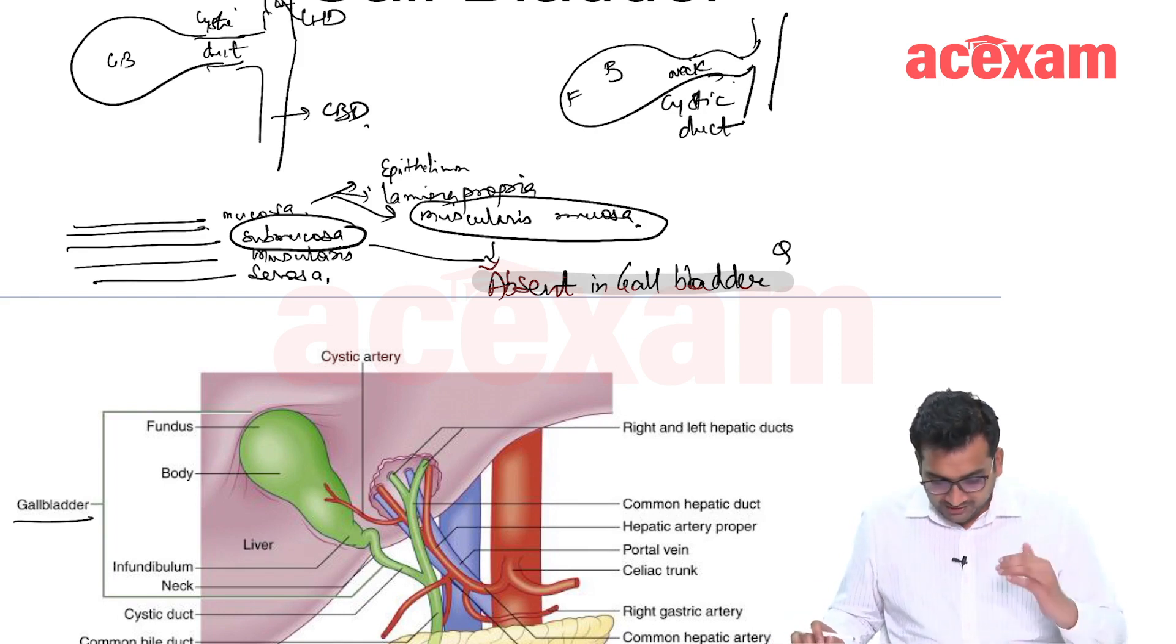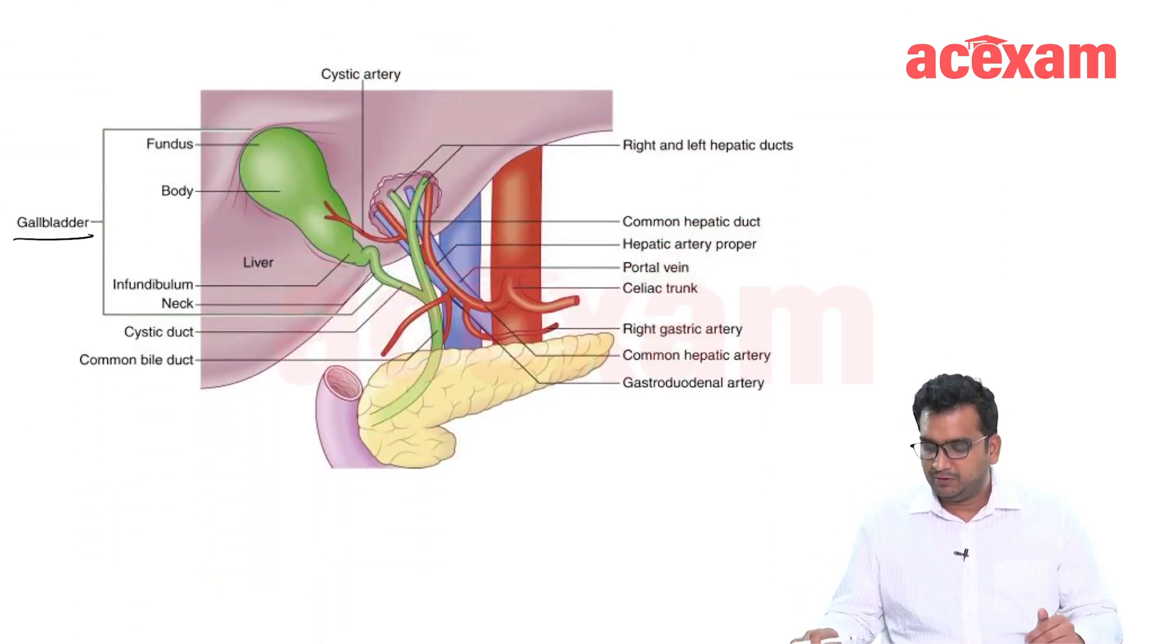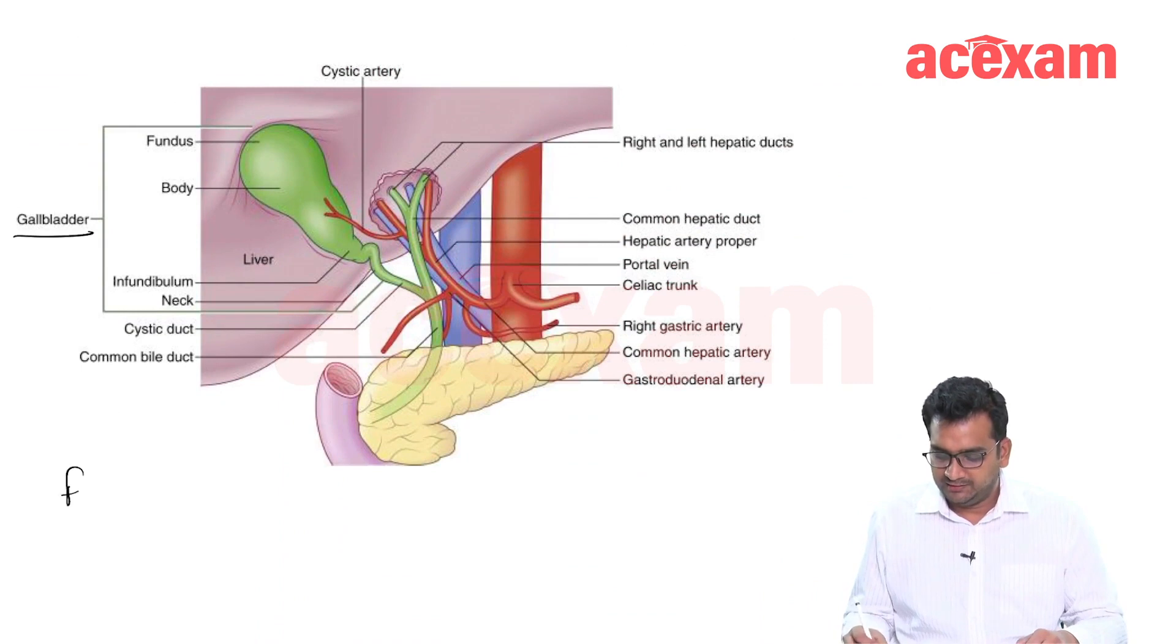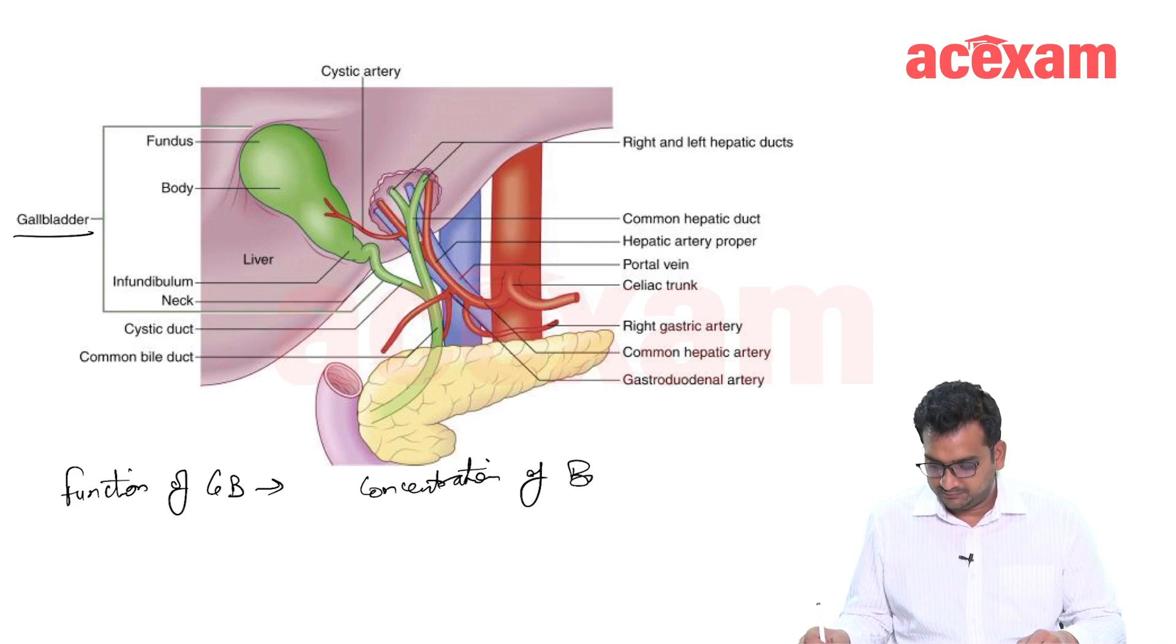Now what is the function of gallbladder? The function of gallbladder is concentration of bile that is 5 to 10 times and acidification of bile.